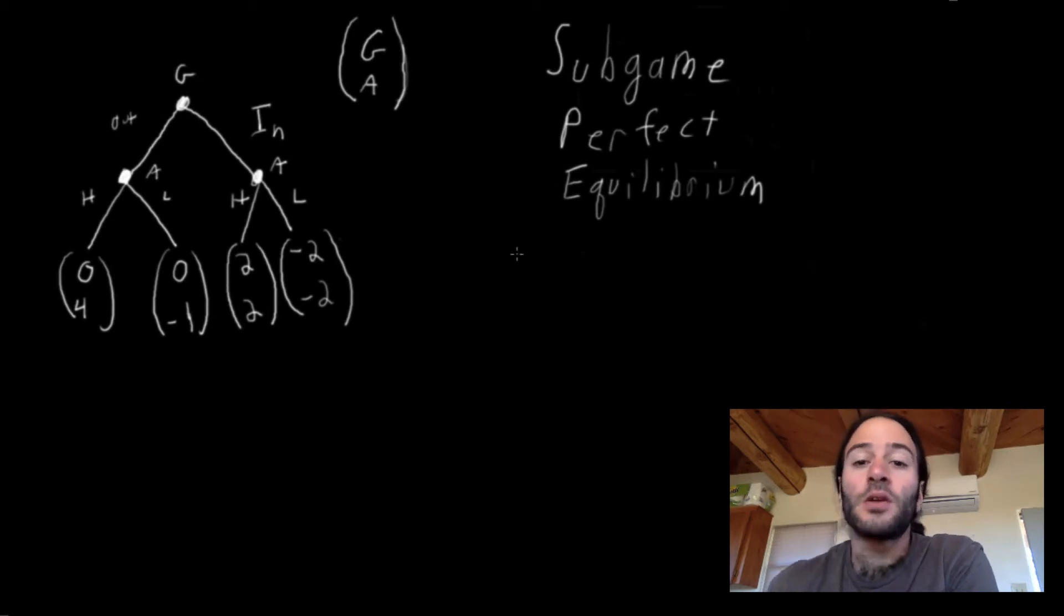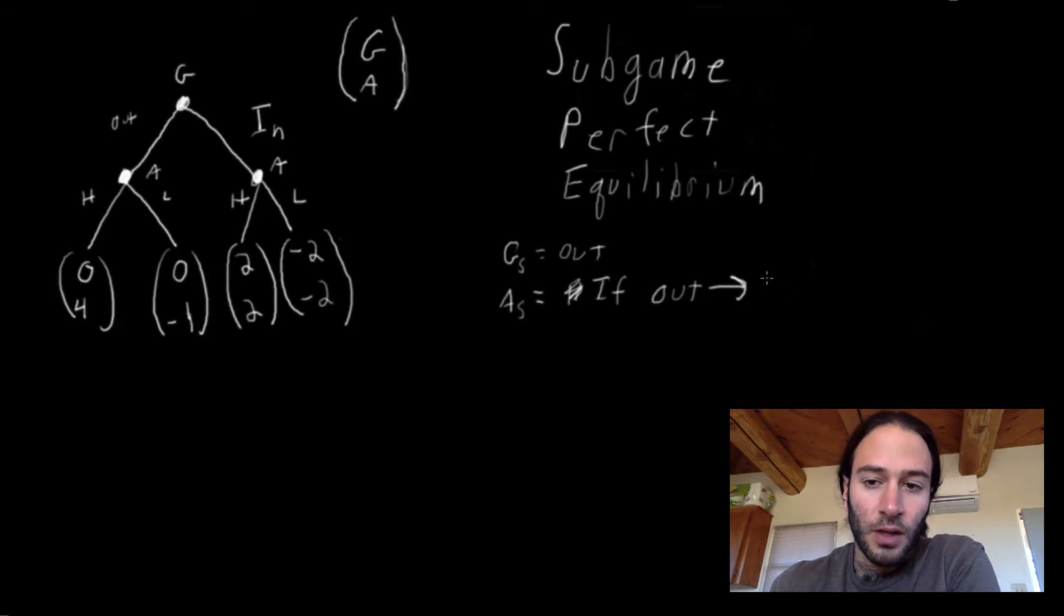So remember in the last video, we saw that Google strategy equals out, Apple strategy - what did we say it was? It was if out, then play a high price action, if in, play low.